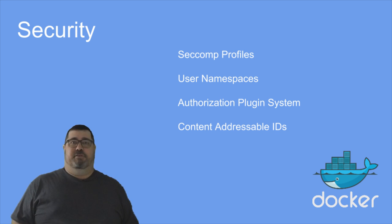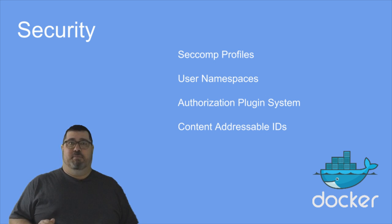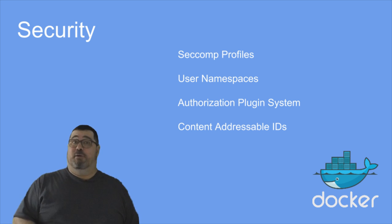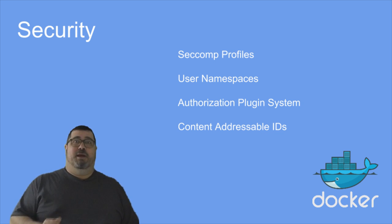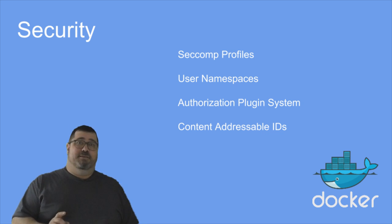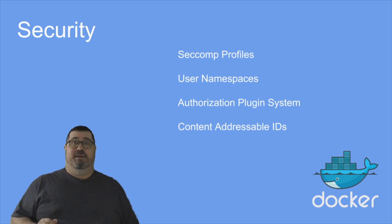There are some great new security features that we've added to Docker Engine. We've added container seccomp profiles for defining complex security policies for syscalls. We've also brought user namespacing out of experimental, and we've added an authorization plugin system for doing complex access control. Now we have content addressable IDs for images. Lastly, we've added an option to create temporary file systems inside containers so that it's easier to run your containers with a read-only file system for improved security.